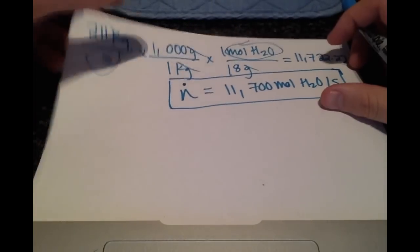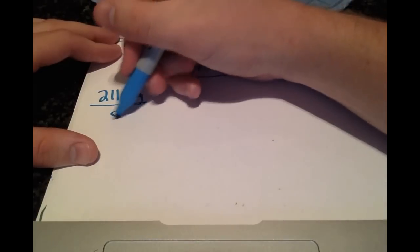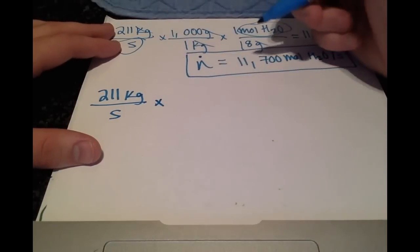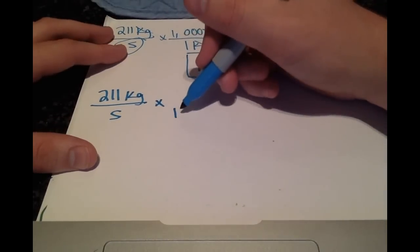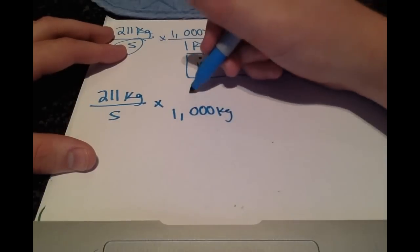So what about the volumetric flow rate? Let's once again write what we know. The mass flow rate, 211 kilograms per second. And we have the convenient conversion factor of density for water, in this case is 1000 kilograms per meter cubed.